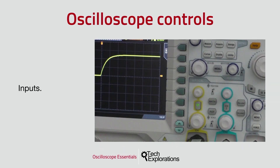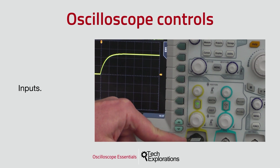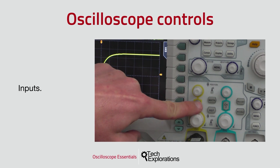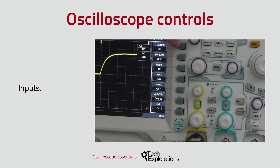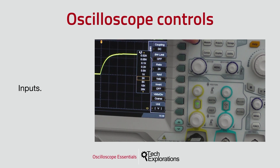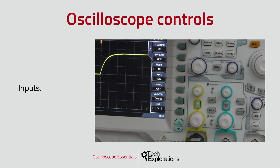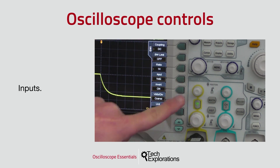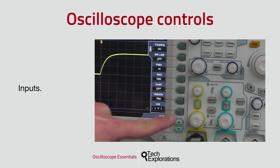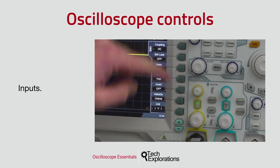Let's move on to the inputs. All oscilloscopes offer at least two inputs where you can connect the probes that convey the signal from the test circuit. Once you connect the probe and attach its tip and ground lead to the test circuit, you can set up your oscilloscope to receive the signal. Each input has its own independent set of parameters. Here I'm browsing through options for channel 1: coupling, ground probe ratio, input impedance, and polarity of the signal, among others. You'll learn more about each of these later in this course.